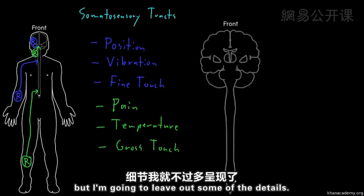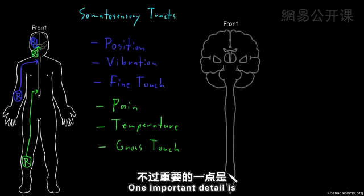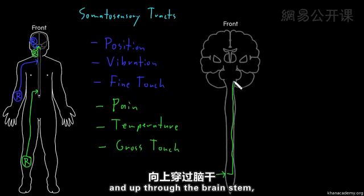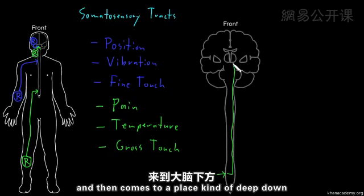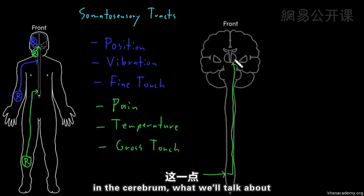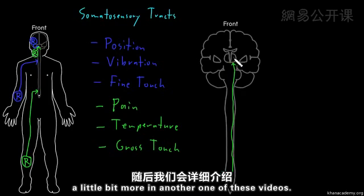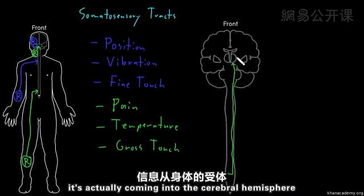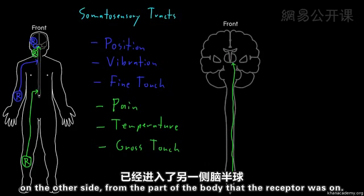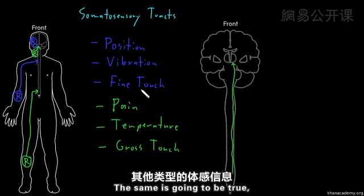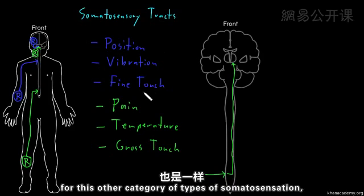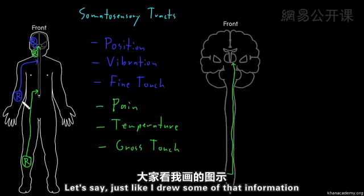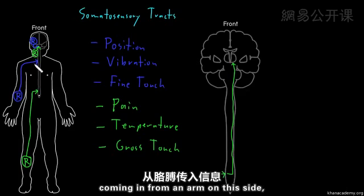An important detail is that this tract actually crosses to the other side, then goes up through the spinal cord and brainstem, coming to a place deep in the cerebrum — on the opposite side from where the receptor was. The same is true for the other category — position sense, vibration sense, and fine touch — shown here entering the spinal cord from an arm.